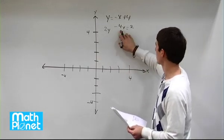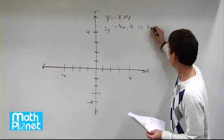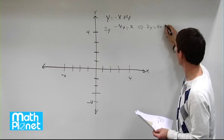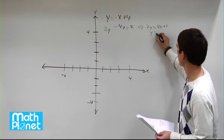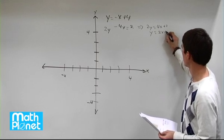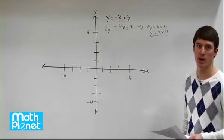So if we do that, we have to move this to the other side, so that gives us 2y equals 4x plus 2, and then we divide both sides by 2 to give us y equals 2x plus 1. So we have these two equations that we're going to draw, and then we can solve.